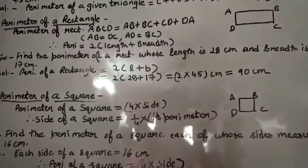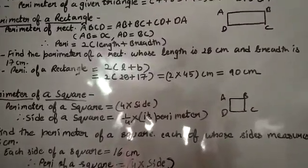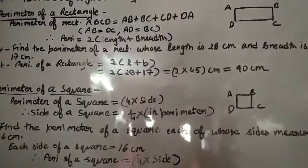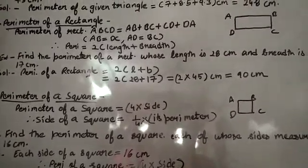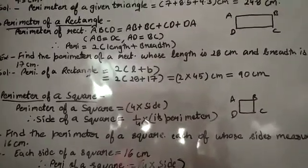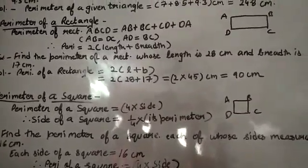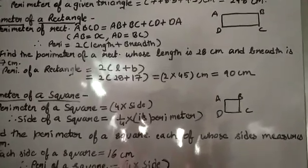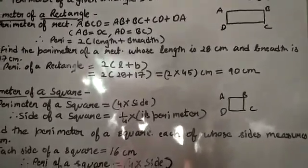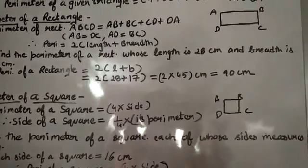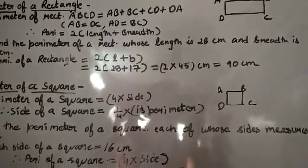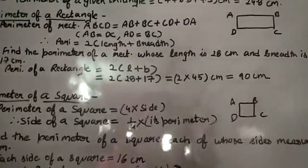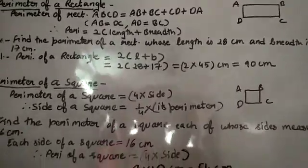First you will add 28 plus 17 — that means you add length as well as breadth — and whatever comes you multiply it by 2. After multiplying, 2 times 45 gives 90. So the perimeter of the rectangle is 90 cm.